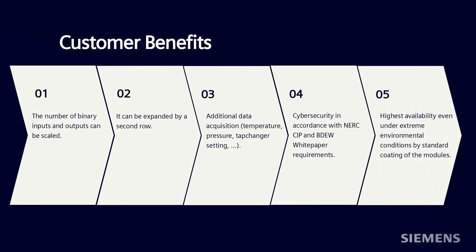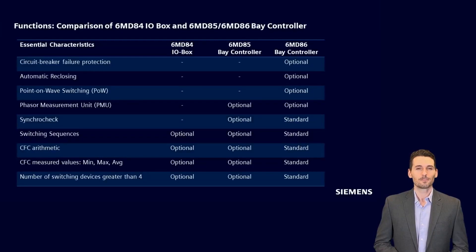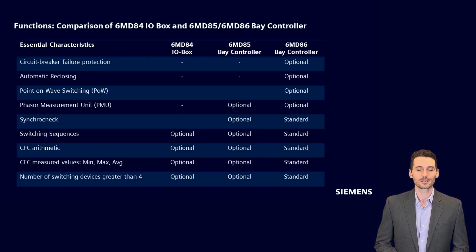Furthermore, it offers excellent availability even under extreme environmental conditions by standard coating of the modules. The main difference between the 6MD84 and other C-Protect 5 modular devices is that the 6MD84 does not need connection to CTs and VTs.